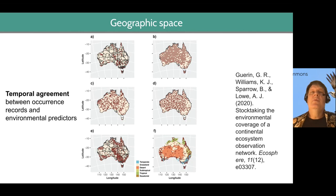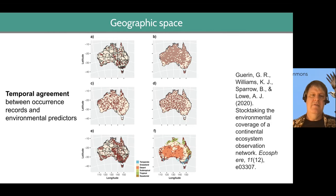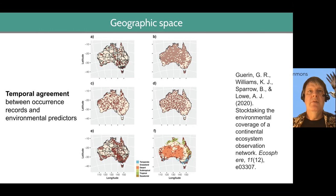First, it's important to plot the occurrence data that you have. And before you plot the occurrence data, first make sure that you've filtered your occurrence data so you're only looking at the years that match the environmental predictors that you're going to use.